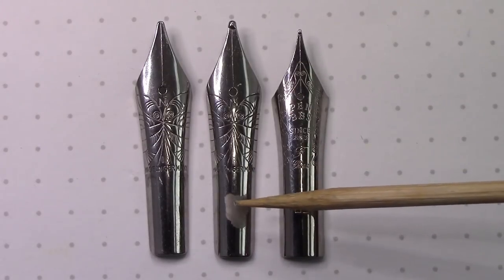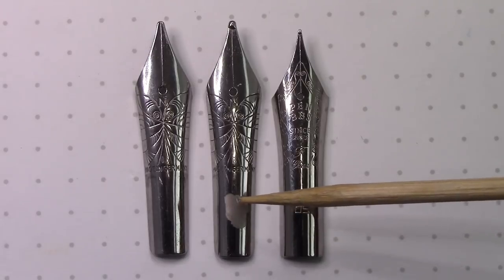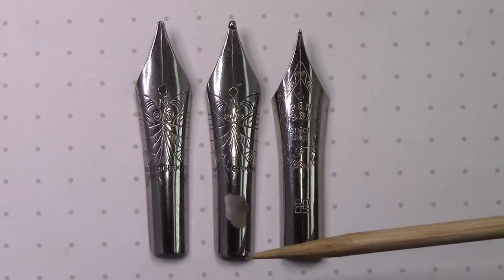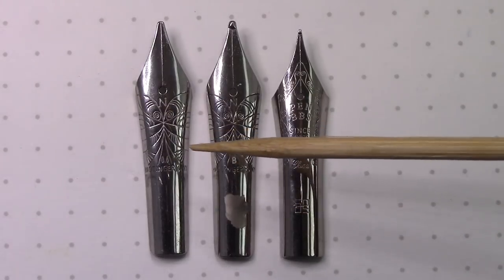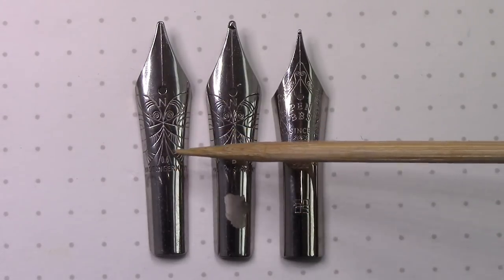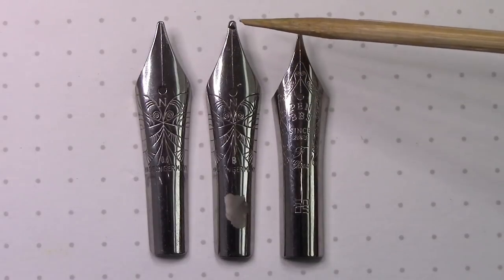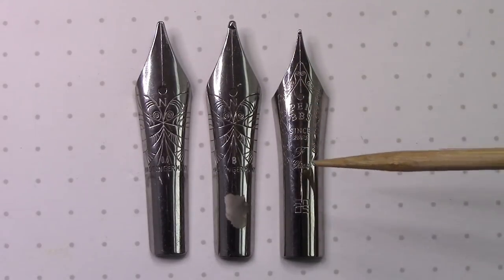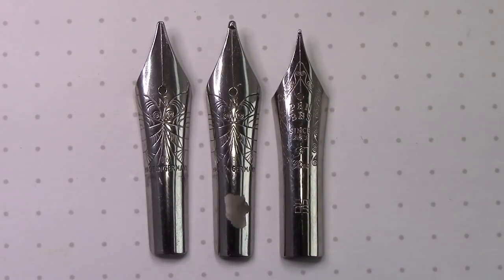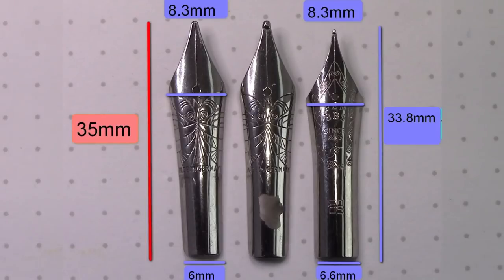As you can see, the plating on this one's kind of worn away. I didn't do anything, it was just that way when I popped it out of the pen. We have the 0.6 stub, we have the broad, and for comparison here's a PenBBS nib. We're going to show you the dimensions, which to me are critical when you replace nibs and see how they work.